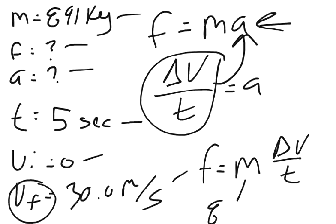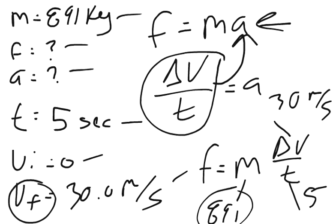The mass is 891 kg. The change of velocity is 30 meters per second, and the time is 5 seconds. So you get 30 over 5, which is 6. You take 6 times 891, and you should get an answer of 5,000.